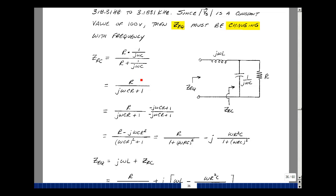Let me multiply the numerator and denominator by jωC. So I just have an R in the numerator, jωCR plus jωC times this would just be equal to 1.